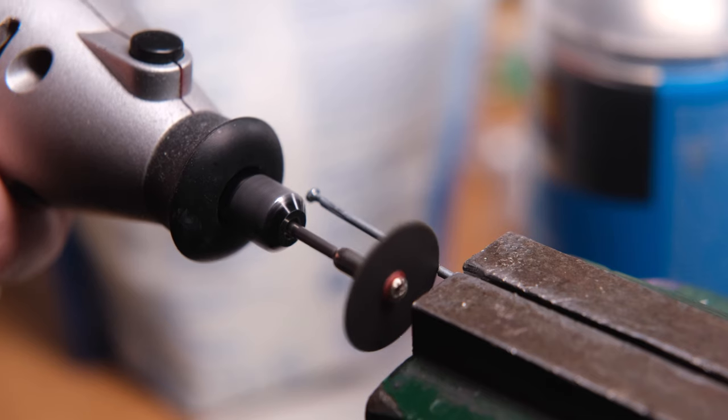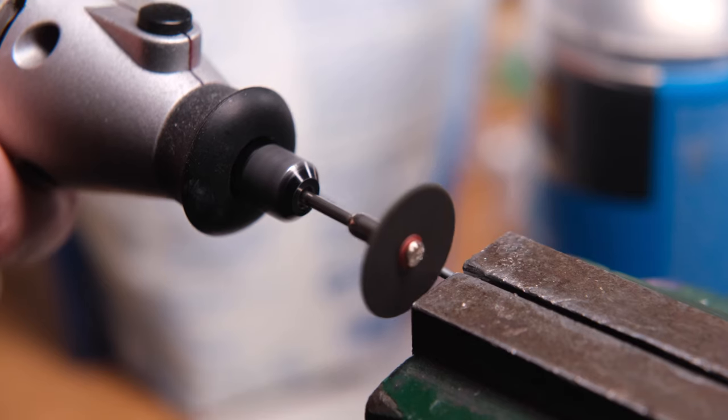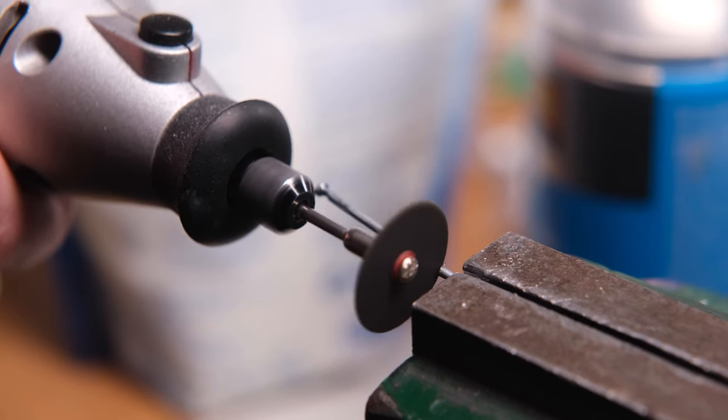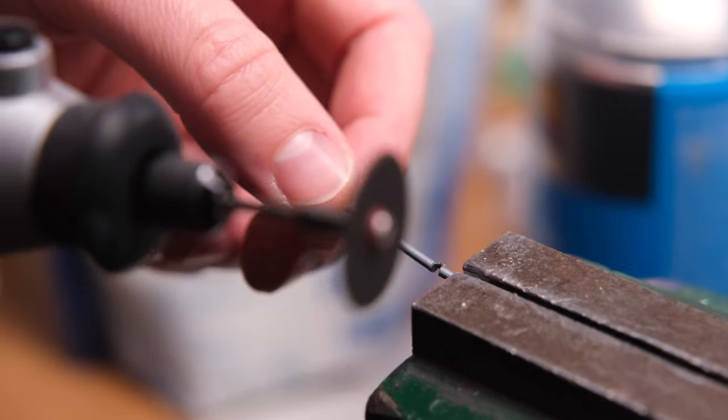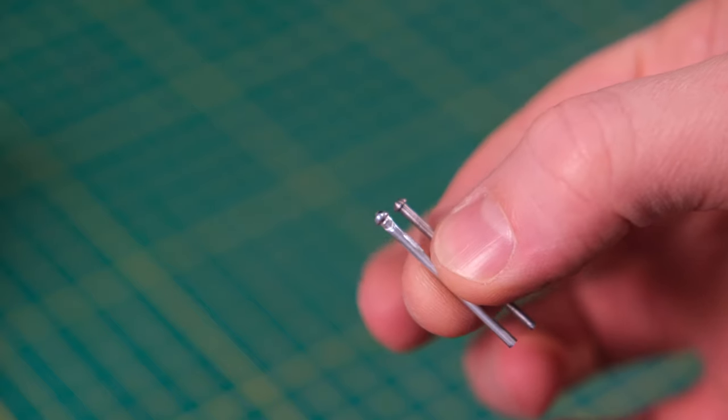I took the rivet head off of a blind rivet as I'd seen this method regularly employed over at Marty's Matchbox Makeovers. It needed cutting down to size so it didn't stick out too far but aside from a minor indentation near the top of the new axle it looked good to me.